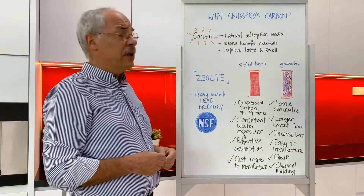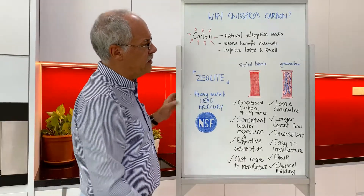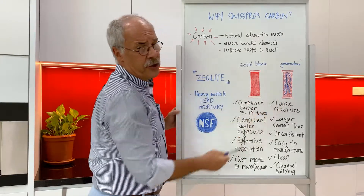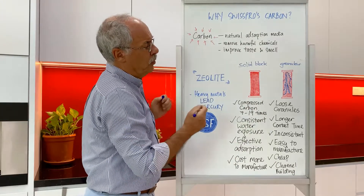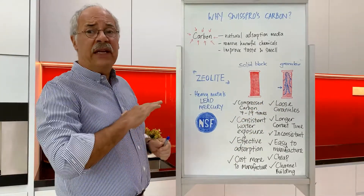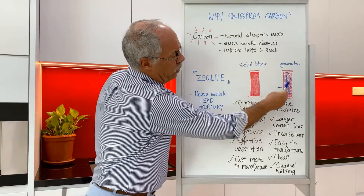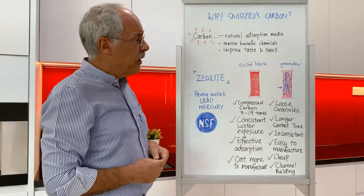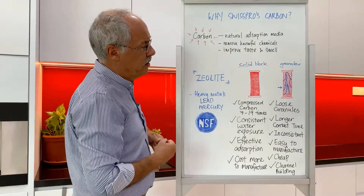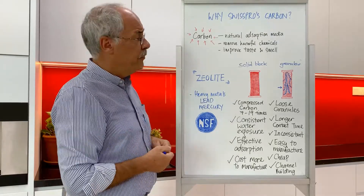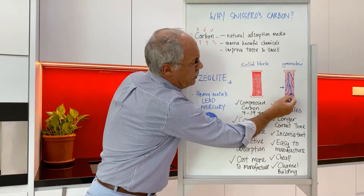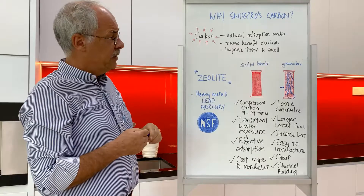The big disadvantage of granular carbon is that because it's a loose material, it typically forms channels. These channels direct water through the cartridge, so ideally we would have an equal distribution of water flowing through all parts of the filter. However, with granulate, water forms its own channels and always uses the same ones, so unless you constantly shake the filter to redistribute the carbon granules, there are parts that are not even properly used. That's a big disadvantage.